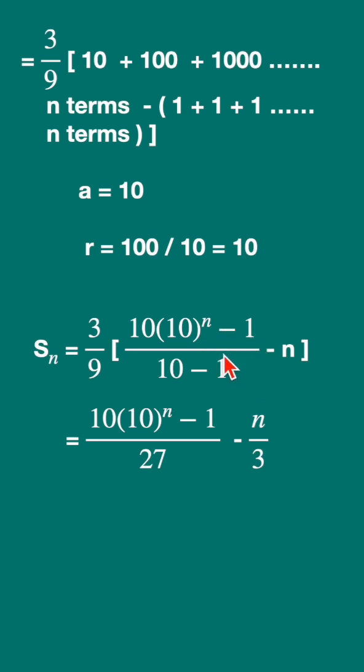Now you can simplify this. 3 will cancel, so 1 upon 3. 3 multiplied by 9, 10 minus 1 is 9, that is 27. Numerator as it is, minus you are opening the bracket, so minus 3n upon 9, so that is also n upon 3.